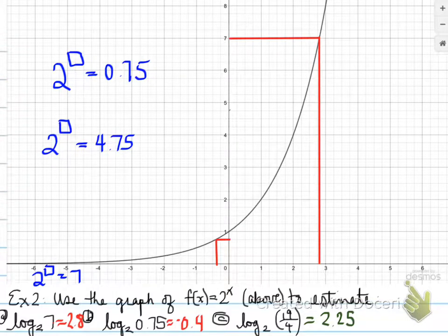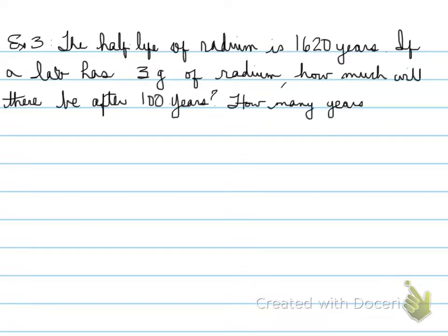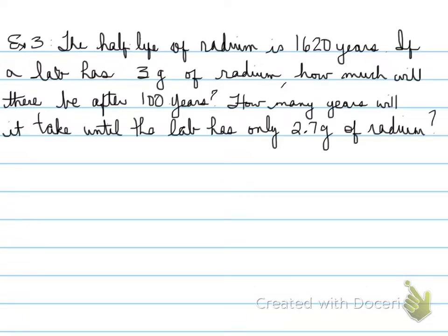Alright, let's move forwards. Example number three, the half-life of a radium is 1,620 years. If a lab has 3 grams of radium, how much will there be after 100 years? How many years will it take until the lab has only 2.7 grams of radium?